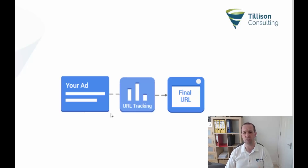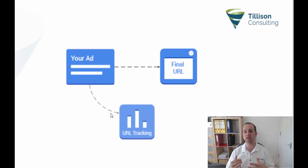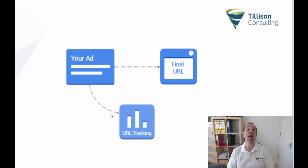We know that conversion rates are dependent on load time, so if you have a long load time, users get bored and they leave. So what Google's trying to do here is just make this a quicker journey and remove that unnecessary step. What will now happen is a user will click your ad, they'll be directed straight to your final URL, their landing page, and what happens alongside that is the URL tracking — instead of stepping through the URL tracking, it's running at the same time in parallel, hence parallel tracking.